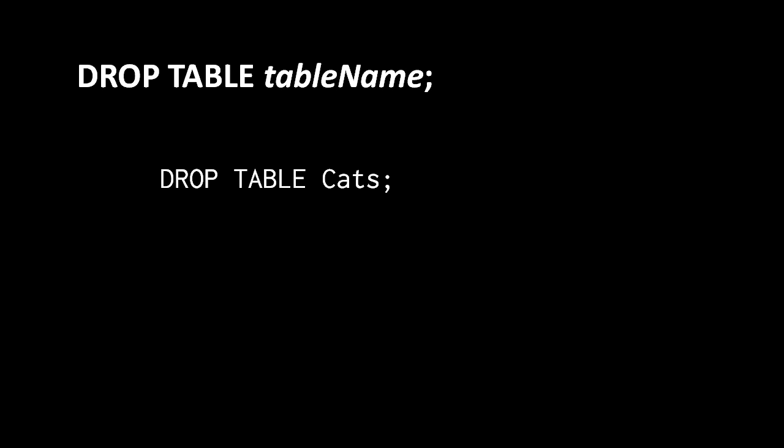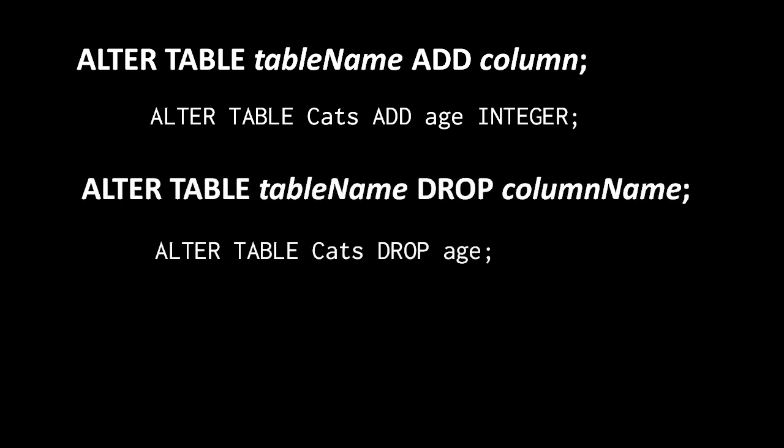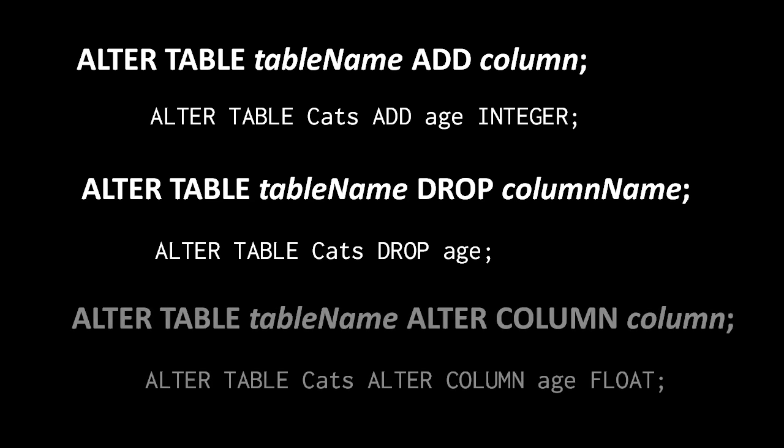If you wish to modify an existing table by giving it a new column, we can do so with the alter statement: we write alter table, the name of the table, then add, then the new column with both the name and the data type. Likewise, we can remove existing columns by writing alter table, the table name, drop, and then just the name of the column — not the data type. Finally, we can change the data type of an existing column by writing alter table, the table name, alter column, then the column name followed by the new data type.